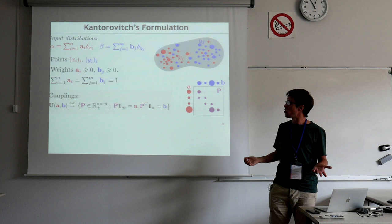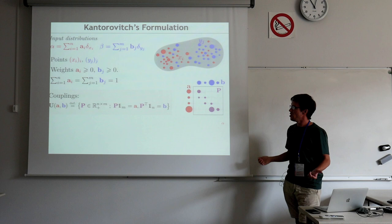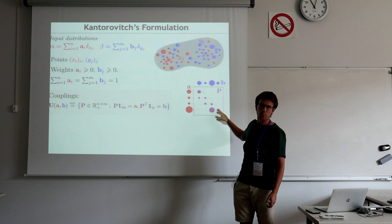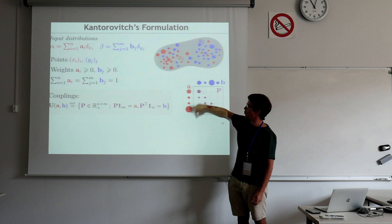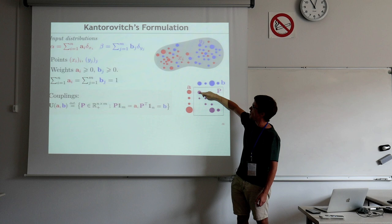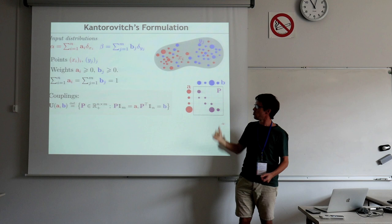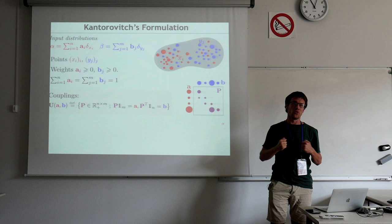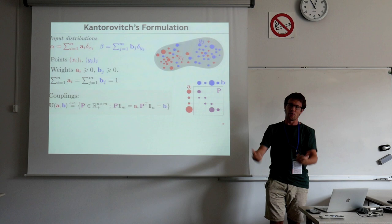The idea of Kantorovich — motivated by economics but completely universal — is to relax the idea of matching points to allow splitting mass. You describe the optimal transport through a coupling, or transport plan, which is basically a 2D array describing the flow of mass from red to blue. Each non-zero element means you transfer some amount of mass. You can also split the mass, which is why Kantorovich got the Nobel Prize in economics: being able to split production gives more flexibility and a simpler problem.